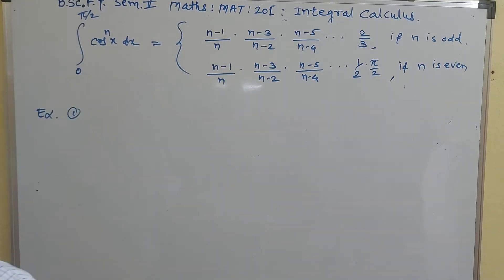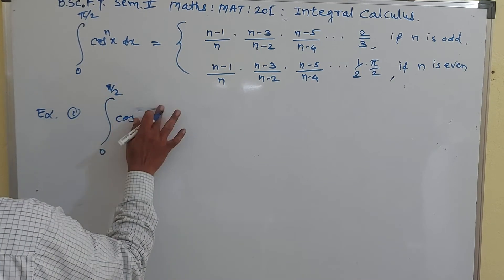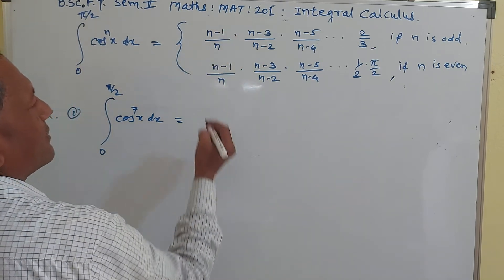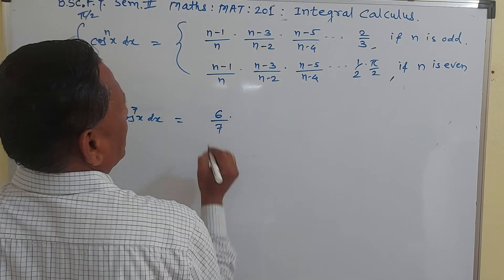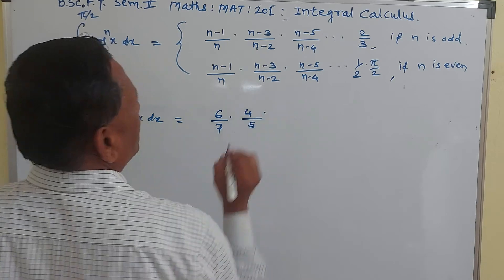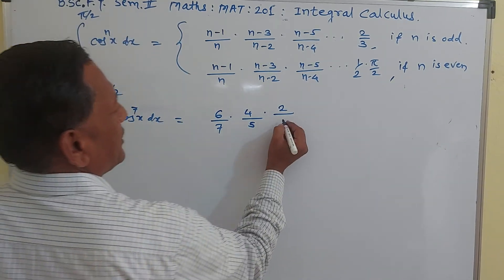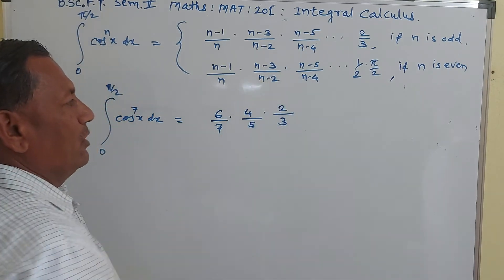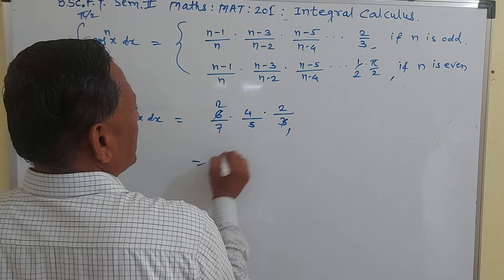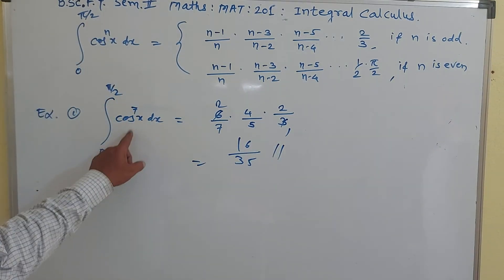Just as you have already found the integration of sin raised to n x dx, the same applies here for the integration from 0 to pi by 2 of cos raised to n x dx. For n equals 7, which is an odd number: 6 upon 7 times 4 upon 5 times 2 upon 3. This gives 16 upon 35, which is the same answer as for sin raised to 7 x dx.